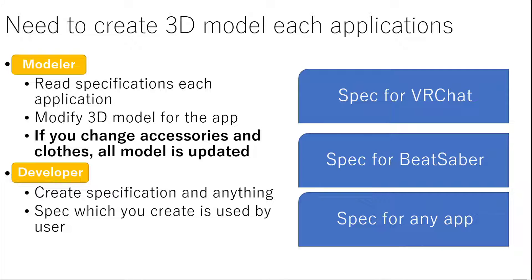As a modeler and setup user, I need to read the specification for each application and modify the 3D model for each one. For example, if you change an accessory or clothing, all model formats need to be updated individually. From the application developer's side, they must create a specification about the 3D model and consider many things. Of course, that specification needs to be usable by modelers and users, but it is not an easy process.